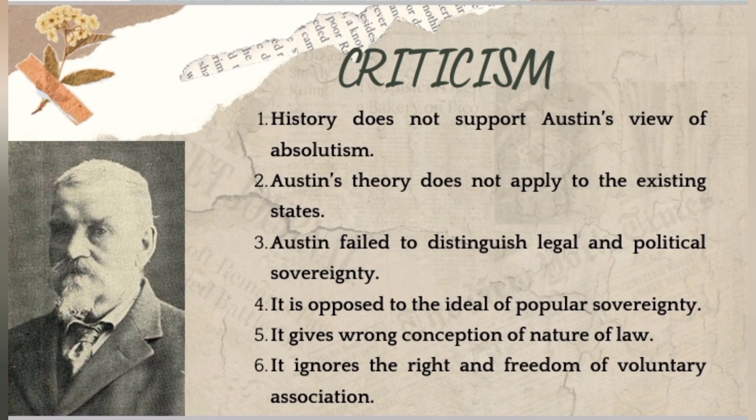Criticism of the Austinian theory: the concept of absolutism it describes has rarely appeared in history, so Austin's principles do not apply to existing states or global scenarios. Austin failed to distinguish between legal and political sovereignty. His theory does not approach the ideal of popular sovereignty — the sovereignty of the people. It gives a wrong conception of the nature of law, and it ignores the rights and freedom of voluntary association.